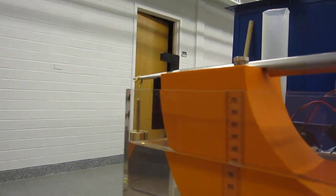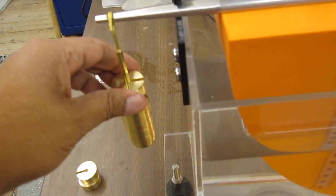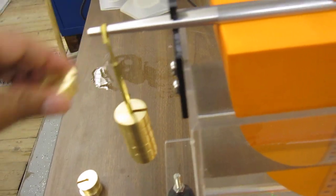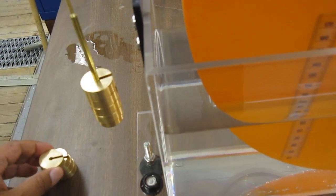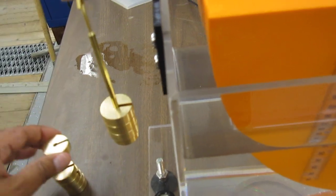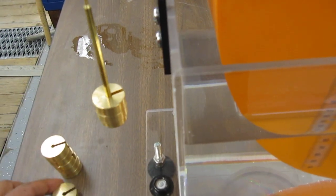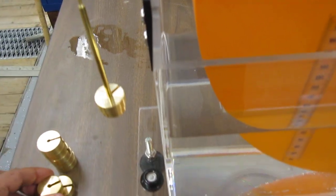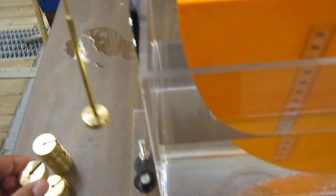Now the water starts flowing into the jar, then the counterweights overtake the pressure. So we start taking away these weights. Meanwhile, the water is flowing out of the tank. It's a very slow process, as you can see right here.